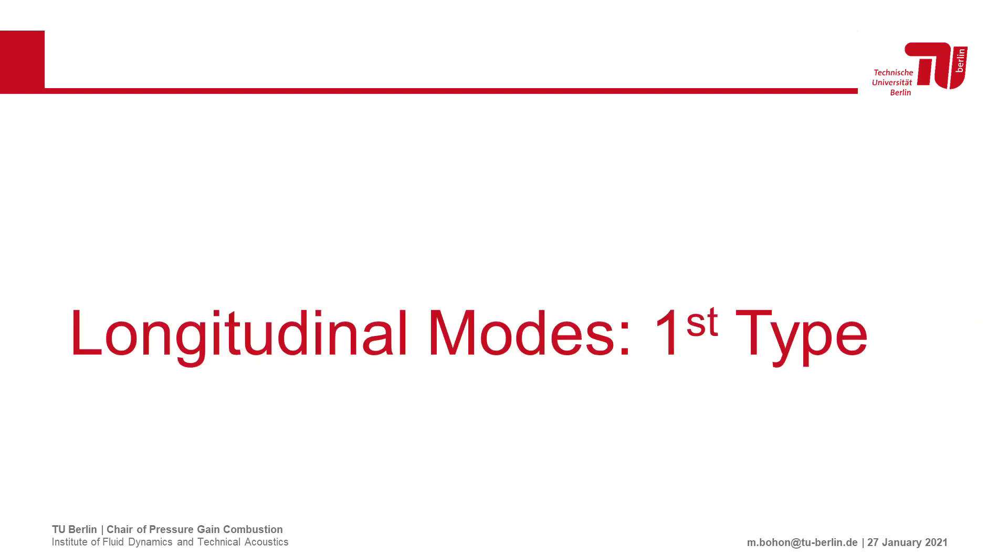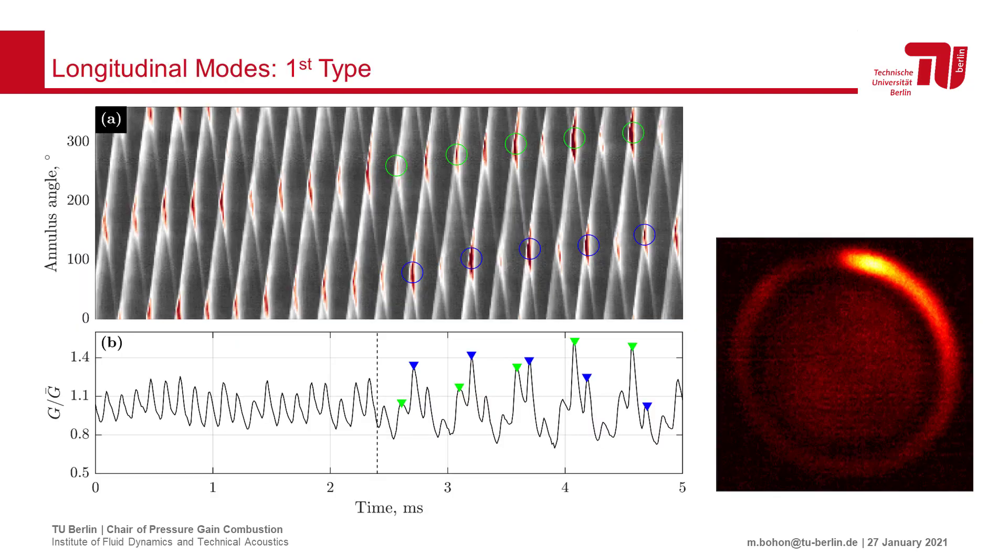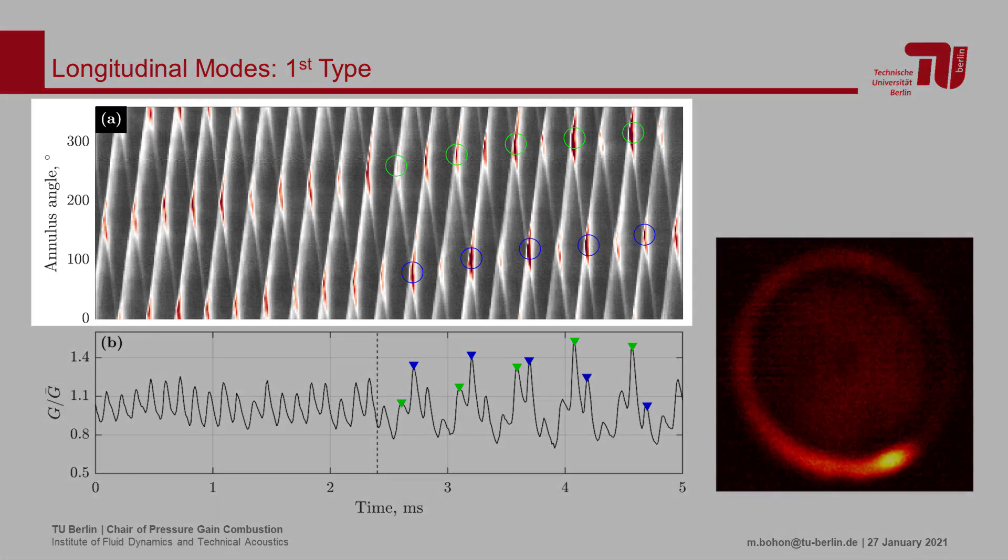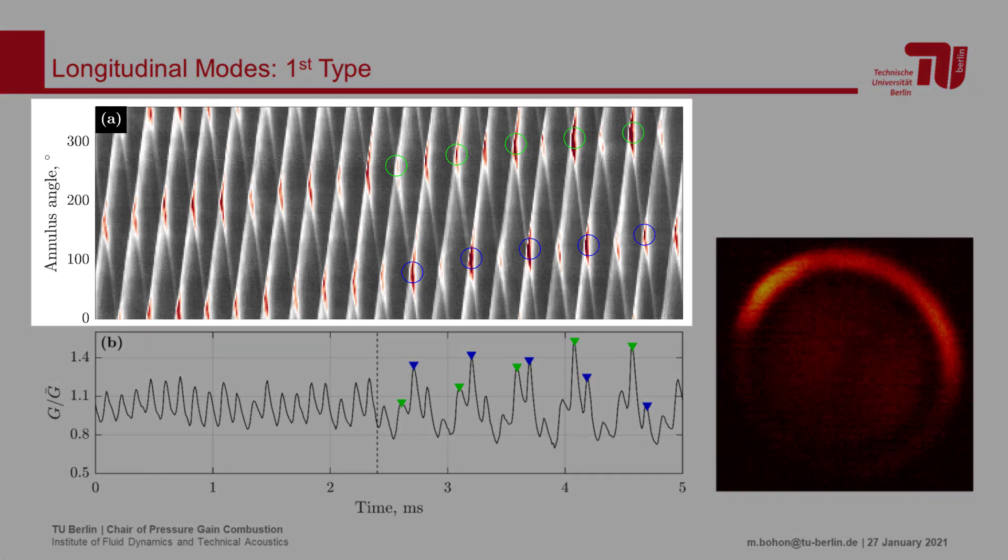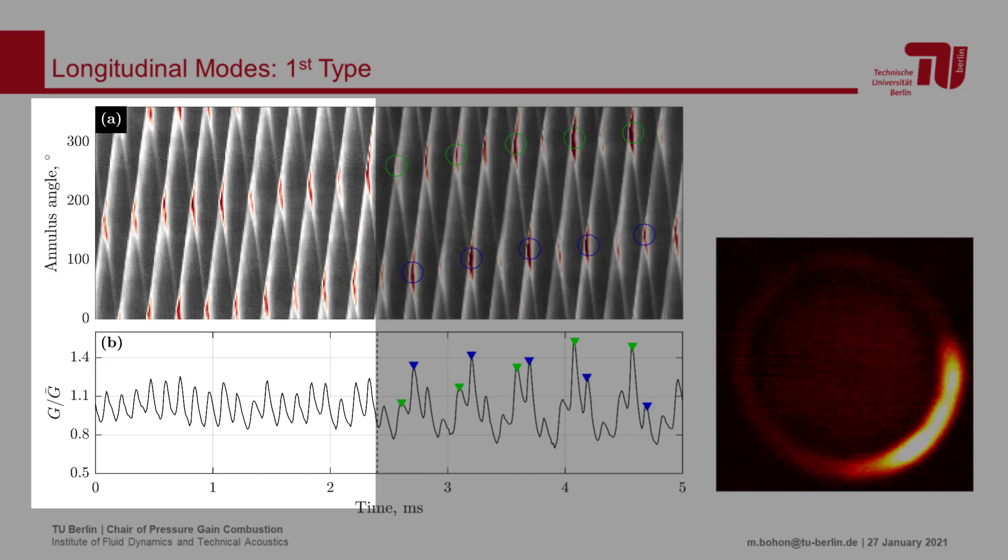We can now begin analyzing our first type of longitudinal mode. Here we see the high-speed video, as well as a space-time diagram of the luminosity. In the average luminosity plot below, we can see the fluctuation about the mean associated with the intersection of the counter-rotating waves occurring at a frequency near 8 kHz.